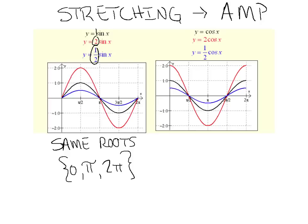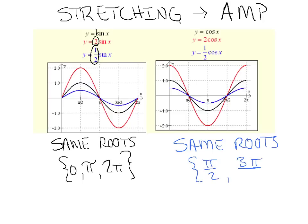By comparison, we've got the cosine curve. Again, the red one's the tallest with an amplitude of 2, the black curve has an amplitude of 1, and the blue curve has an amplitude of 1 half, so we're stretching them again. All three graphs have the same roots — on the cosine curve, those roots are at pi over 2 and at 3 pi over 2.